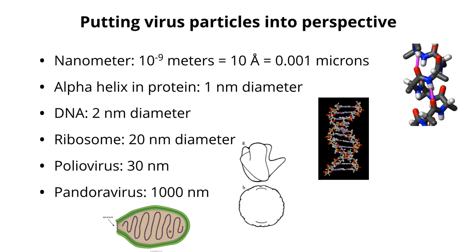Obviously the giant microbes version is different from the real thing since they didn't consult me when they made their fuzzy viruses. The smallest viruses are 20 to 30 nanometers in diameter. The biggest one, pandora virus, is 1,000 nanometers in diameter — about a micron long. Those are the terms we're going to be using.